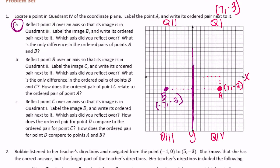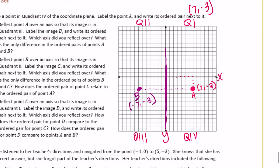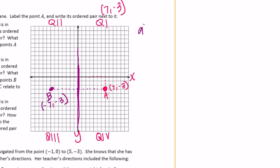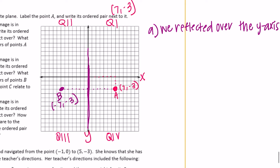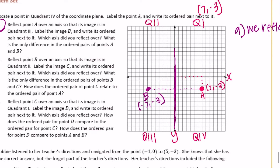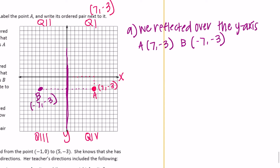Label image B and write its ordered pair next to it. Which axis did we reflect over? We reflected over the y-axis. What is the only difference in the ordered pairs of A and B? A is (7, -3) and B is (-7, -3), so the only difference is that the x-coordinates are opposites.